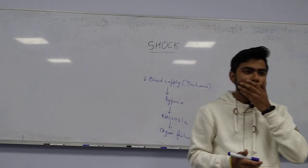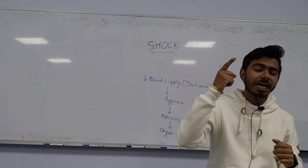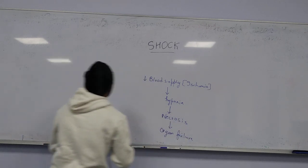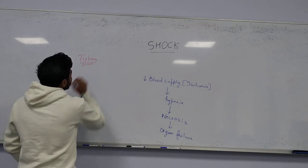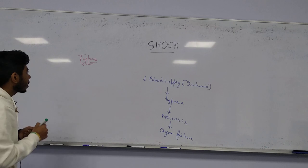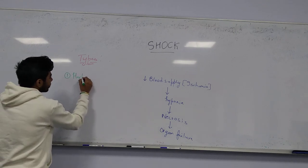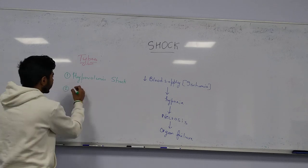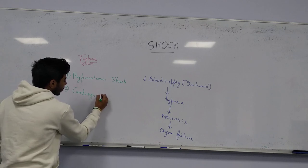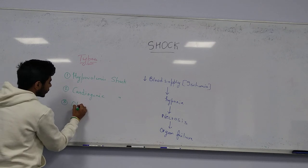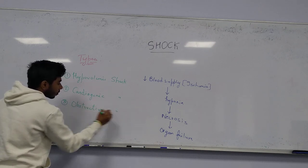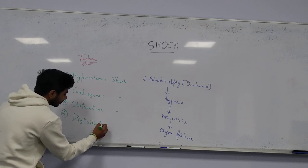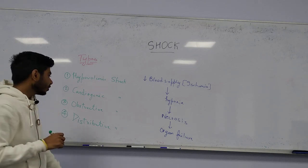One type of shock we already discussed in type 1 hypersensitivity reactions is anaphylactic shock. Now let's talk about all the types of shock. First is hypovolemic shock, second is cardiogenic shock, third is obstructive shock, and finally distributive shock, which is a broad category.